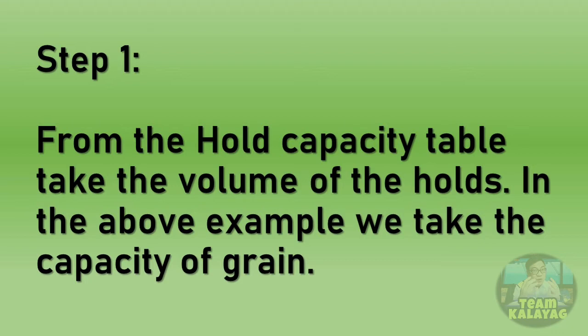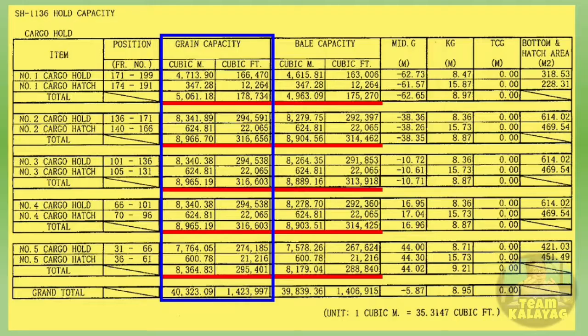Step 1: From the hold capacity table, take the volumes of the holds. In the above example, we take the capacity of grain. In taking the volumes of each hold, please consider two things: the cargo hold volume and the cargo hatch volume.